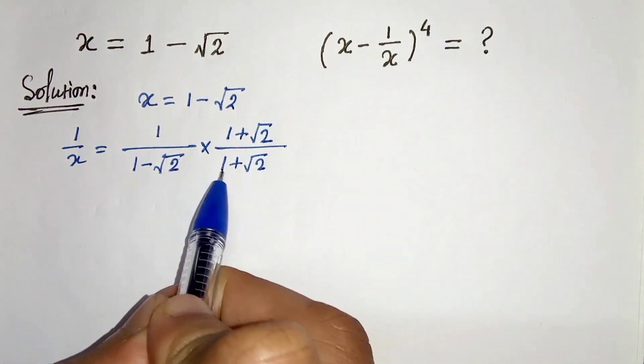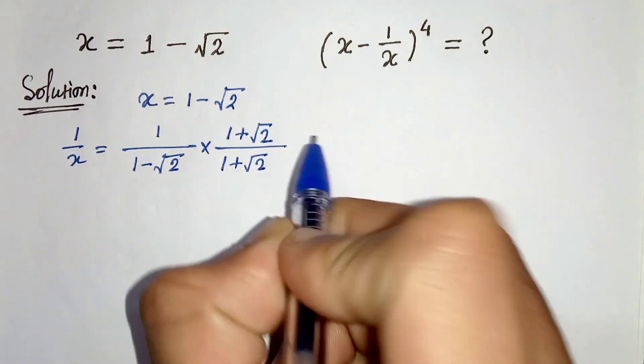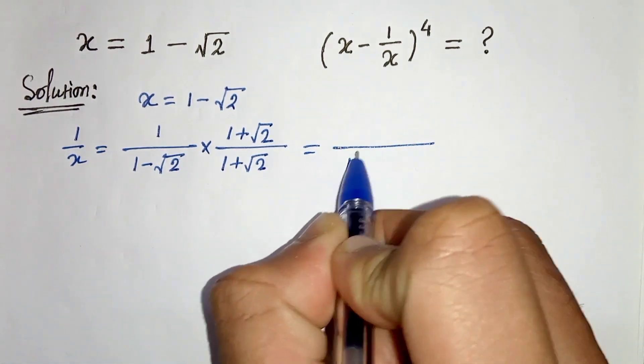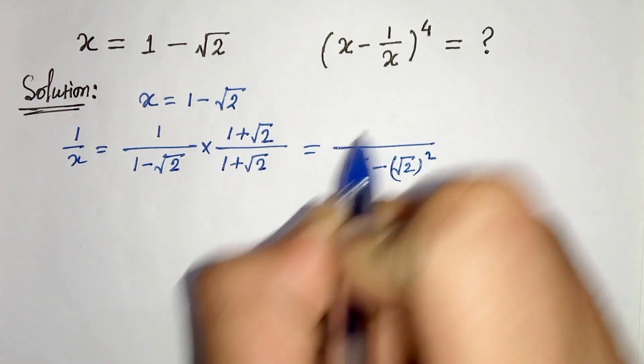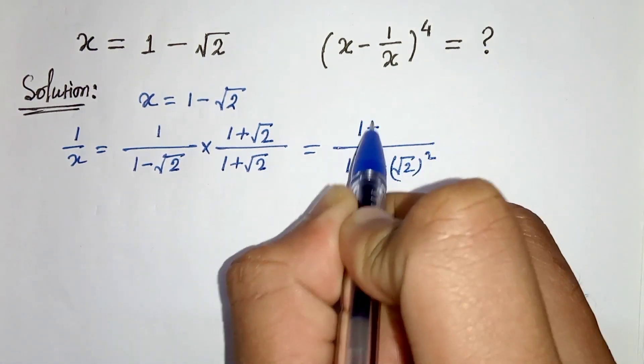This is nothing but a minus b times a plus b, which is a square minus b square. So we can write a square, that is 1 square minus root 2 square, and in the numerator we have 1 plus root 2.